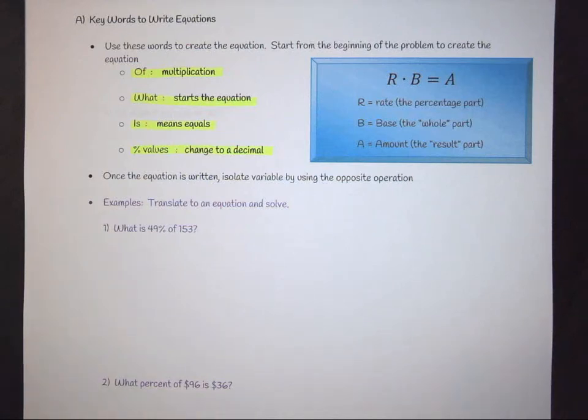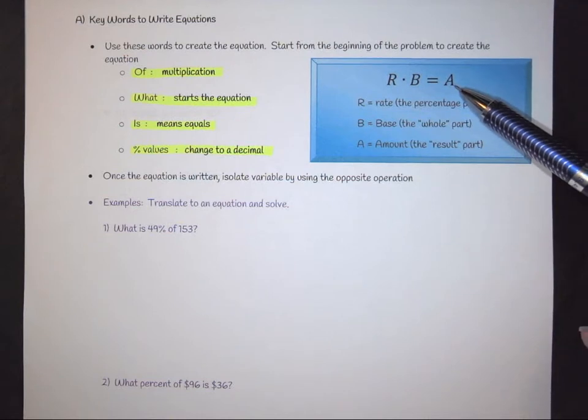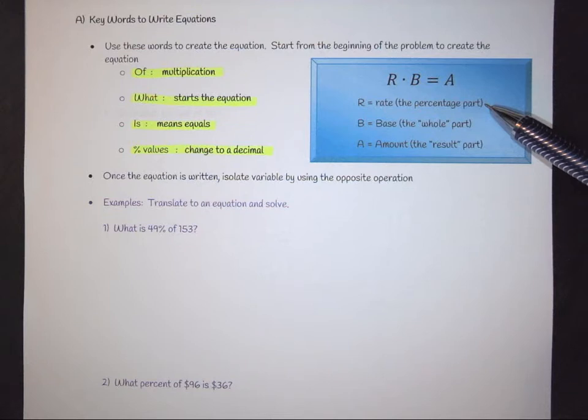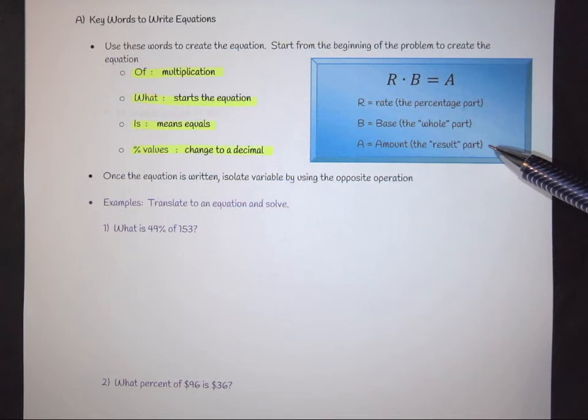Okay, one way that we can attack percent problems is we can use an equation instead of a proportion. An equation is set up in this fashion where we have R times B equals A. Now with this, we have to know what these variables are. R is your rate. Rates are the percentage. Base would be the whole or the bigger picture and then the amount is the result or the smaller picture.